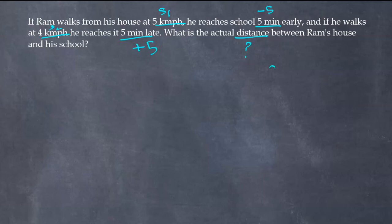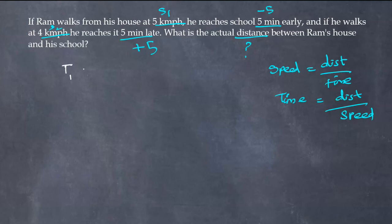So again the formula we know is speed equals distance by time. We have to convert this in terms of time: time equals distance by speed. Now substitute these values in the formula.